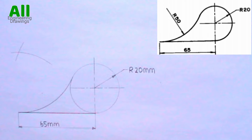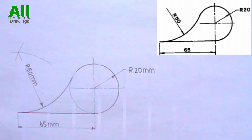Make the part of the circle that is supposed to be bold, bold. Indicate the radius of the arc. The above tangency problem has been drawn successfully.